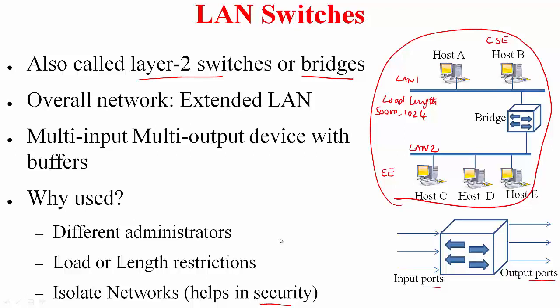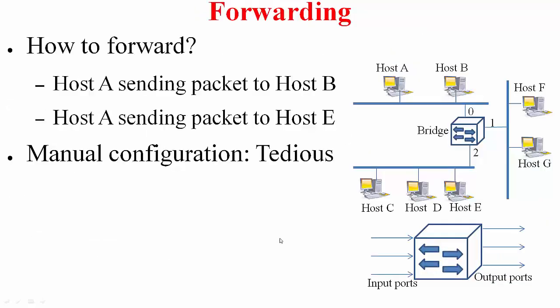Now that we are convinced that bridging is useful, an important functionality that we need to address is the following: How do you forward packets? Suppose host A is sending a packet to host B. This packet is being received by this bridge on this particular port. What should it do with this particular packet? Drop the packet because host B is also on this particular LAN segment itself. Similarly, if host A were to send a packet to host E, ideally what should this bridge do? Since host E is on the segment that is connected through its port 2, it should take that packet and send it out on port 2 and not on port 1.